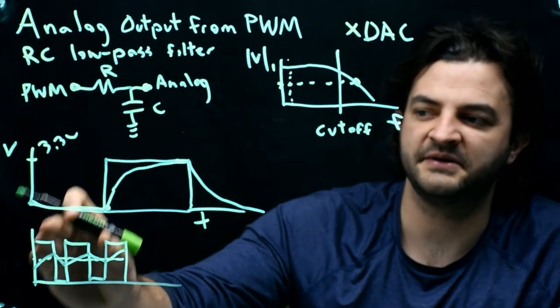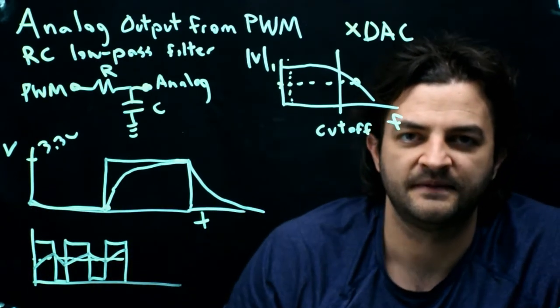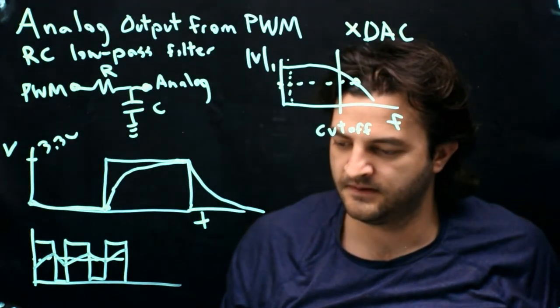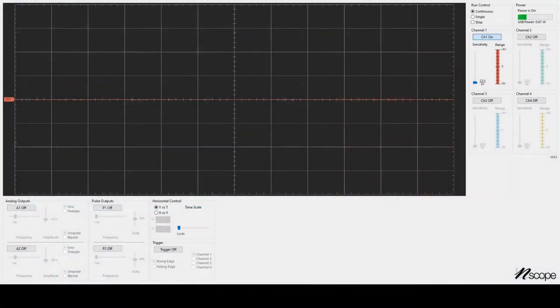But of course, that is also going to limit how fast we can change that voltage. So let's take a look at an example of this on an N-scope.